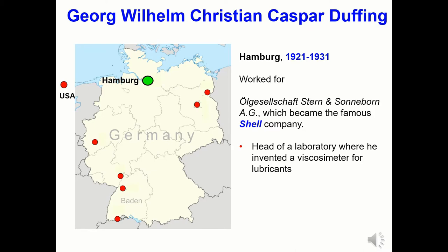In 1921, the Duffing family were in financial difficulty and so they moved to Hamburg. Duffing was employed as head of an oils laboratory by the forerunner of the famous Shell Company, and whilst there he invented an oil viscosity meter. A tragic part of his life came in 1927 when the ship Cap Arcona experienced engine failure. His company had provided the oil made according to Duffing's instructions. There was an inquiry, and Duffing testified that many types of oil had been mixed, probably to save money, resulting in the engine failure. Because he had testified against the company, Duffing lost his job.